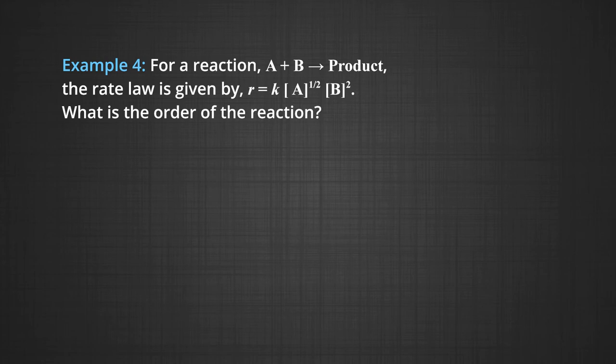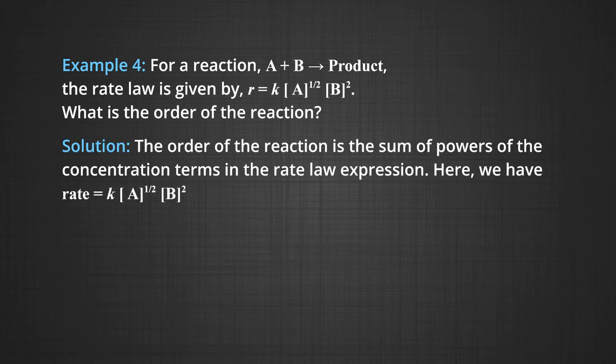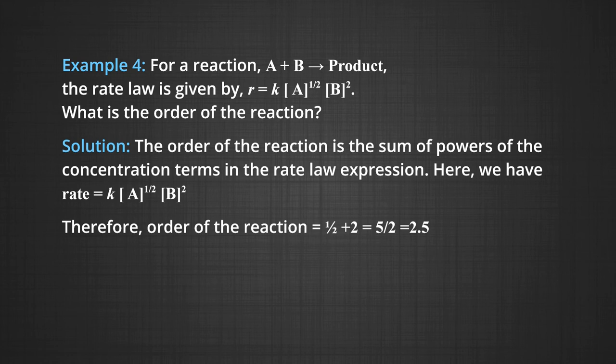For a reaction A + B → products, the rate law is given by R = k[A]^(1/2)[B]². What is the order of the reaction? The order = sum of powers = 1/2 + 2 = 5/2 = 2.5. Thus the reaction is a 2.5 order reaction.